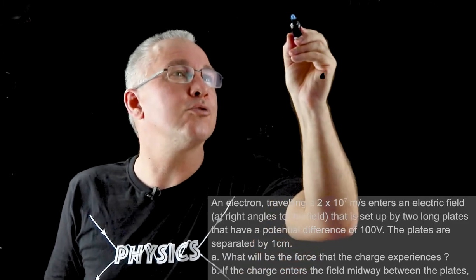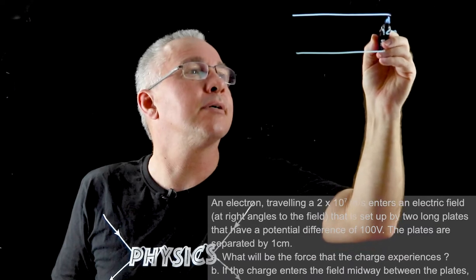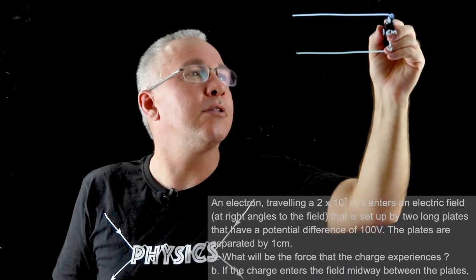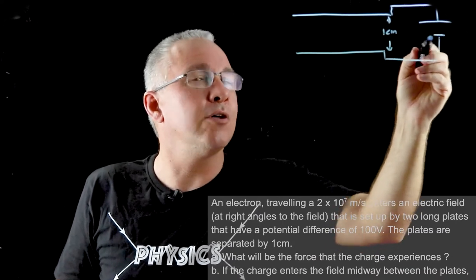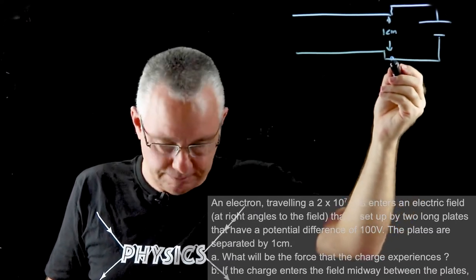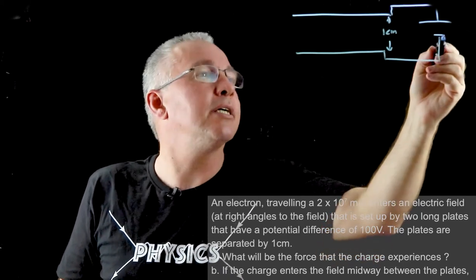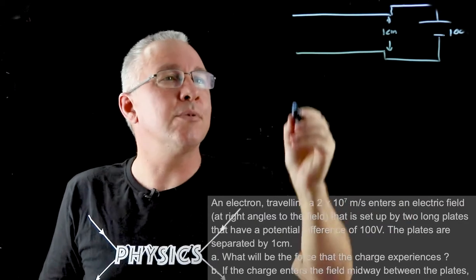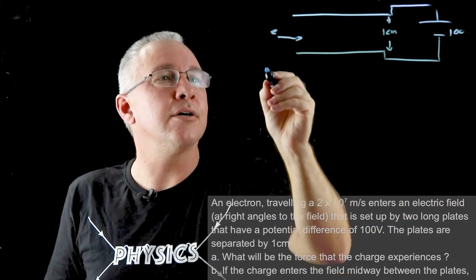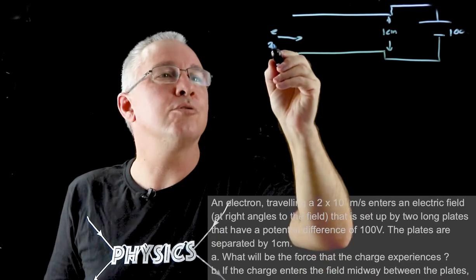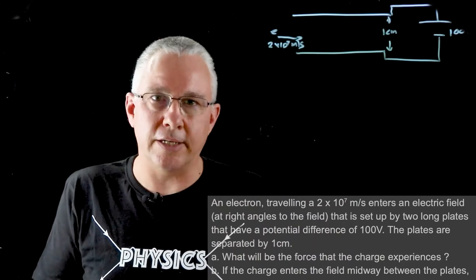So here are our two plates and we know that they are separated by a distance of one centimeter. Secondly, we know that we have a potential difference across those two plates and that voltage that we are given is 100 volts. And then we're told that an electron is entering that field like so at a velocity of 2 by 10 to the power of 7 meters per second. So there's our diagram.